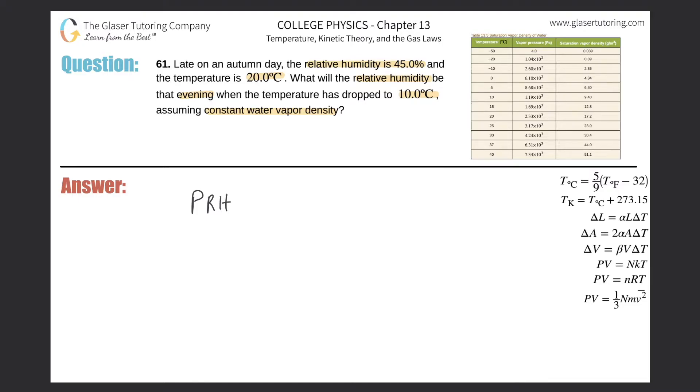So percent relative humidity finally will be equal to the percent relative humidity initially, multiplied then by the saturation vapor density initially, all then divided by now the saturation vapor density finally. So they're asking us to find some percent relative humidity that evening or later in the day. So this is what I'm after. That means I need to know these three variables.